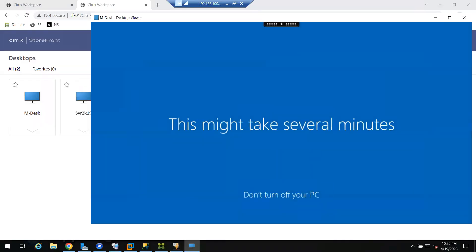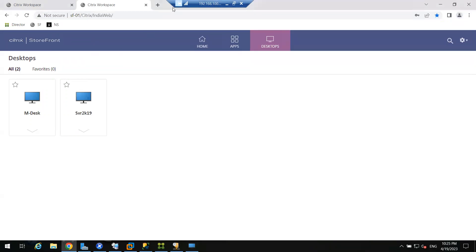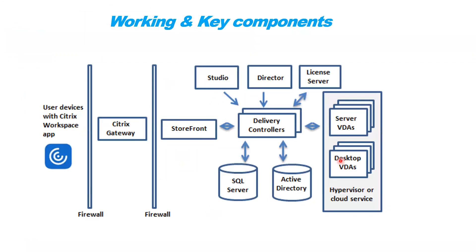Once the machine powers on, it will check for the license server and register the machine into the delivery controller. What is Studio? During the launching process, there is nothing to do with Studio or Director - only the license server is involved. Studio is a tool with which you can manage the machine catalog, manage delivery groups, and manage users. Director is a monitoring tool for those operations.